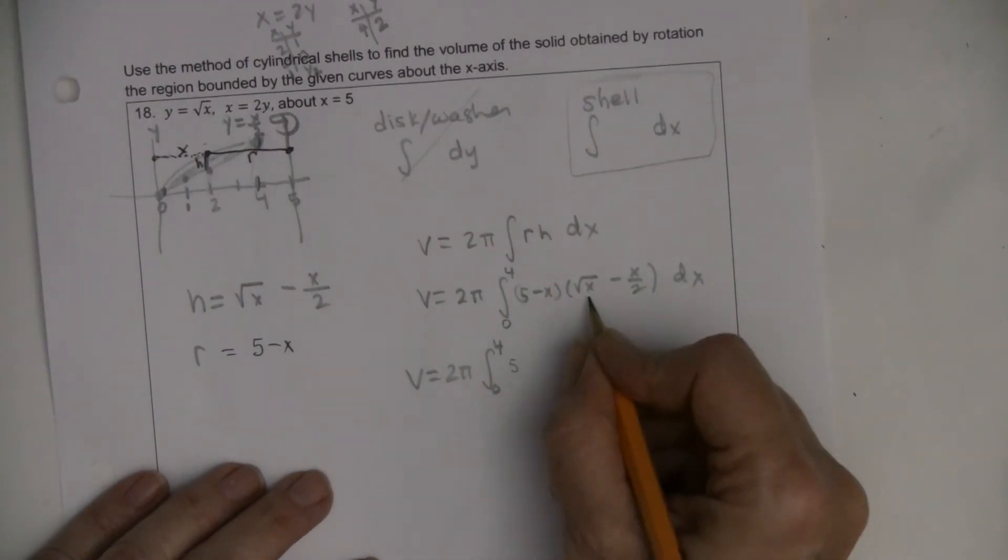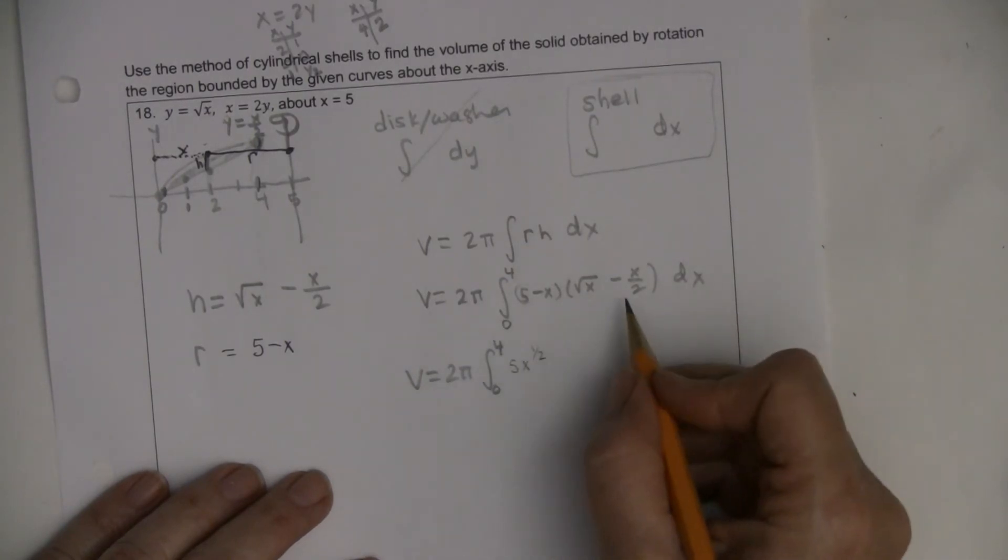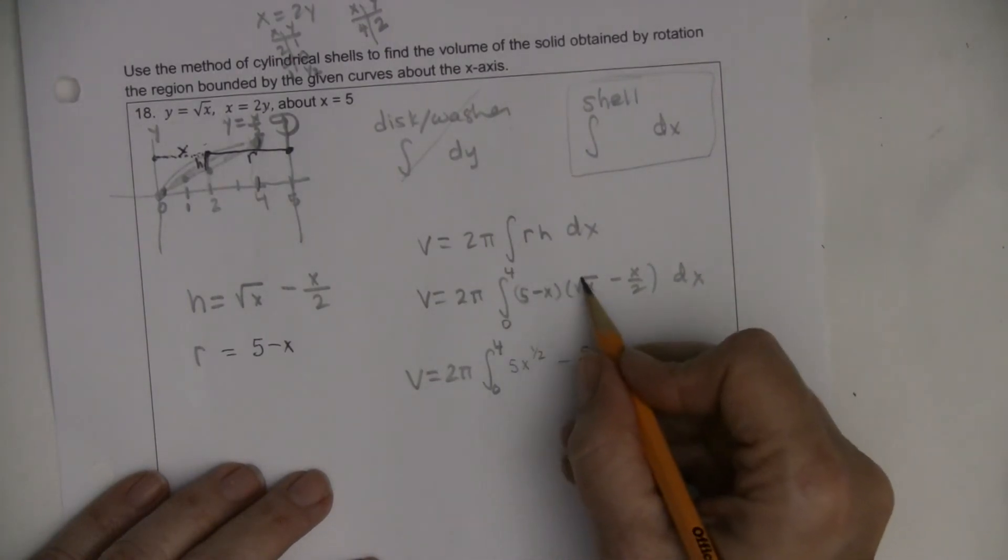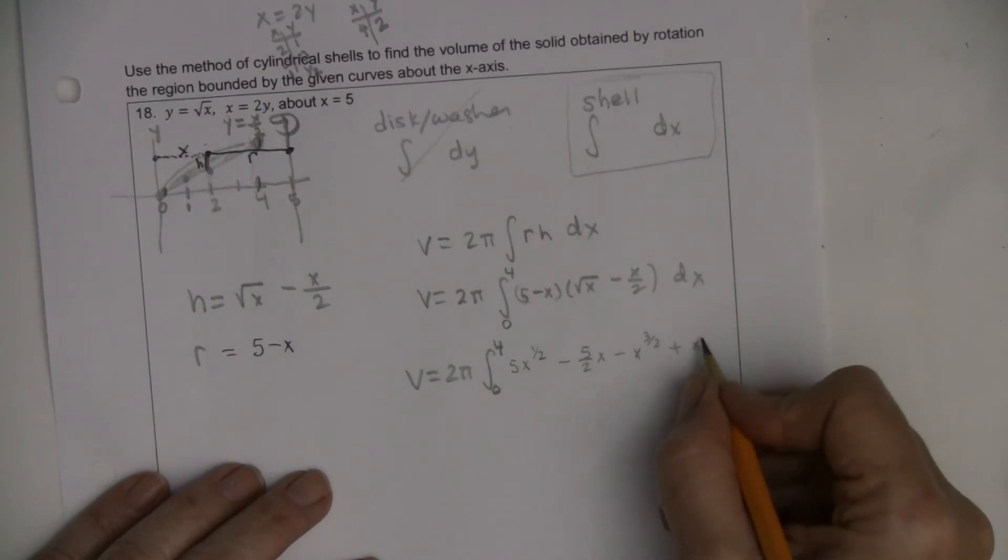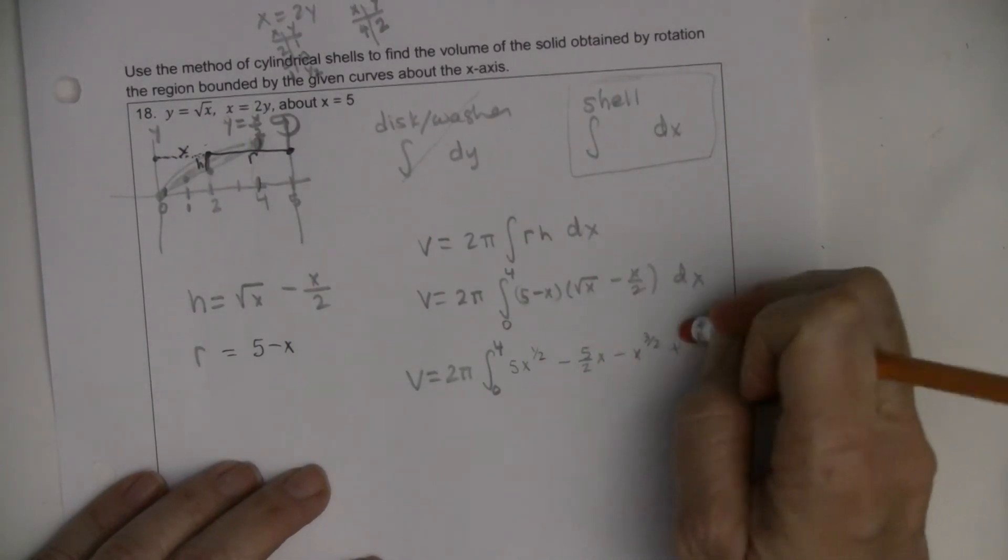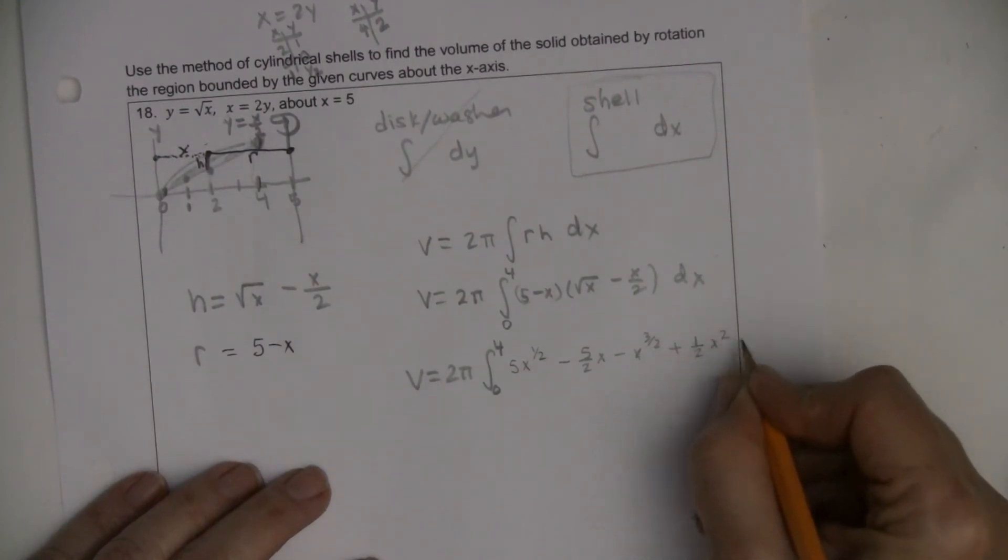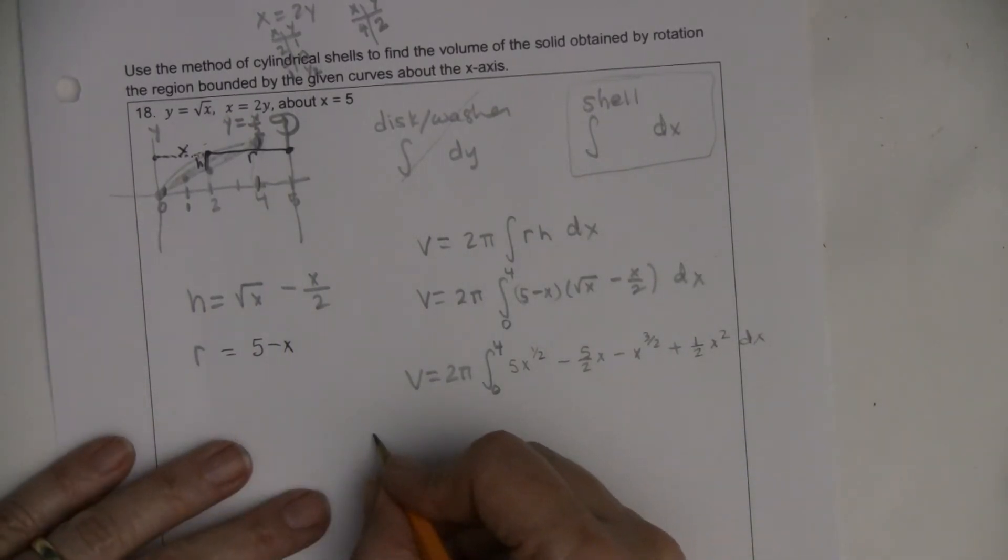I'm going to write the square root as x to the 1/2, and then 5 times this, that's going to be negative 5/2 x. And then this is going to be minus x to the 3/2. And then that's going to be positive x squared. I'm going to put 1/2. I was going to say x squared over 2, but it's easier to find the antiderivative if I put 1/2, because then I hold still the 1/2.